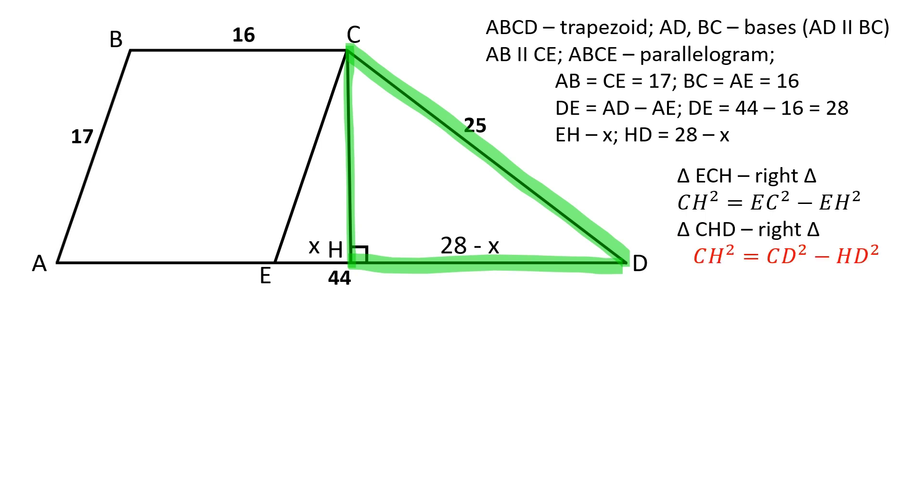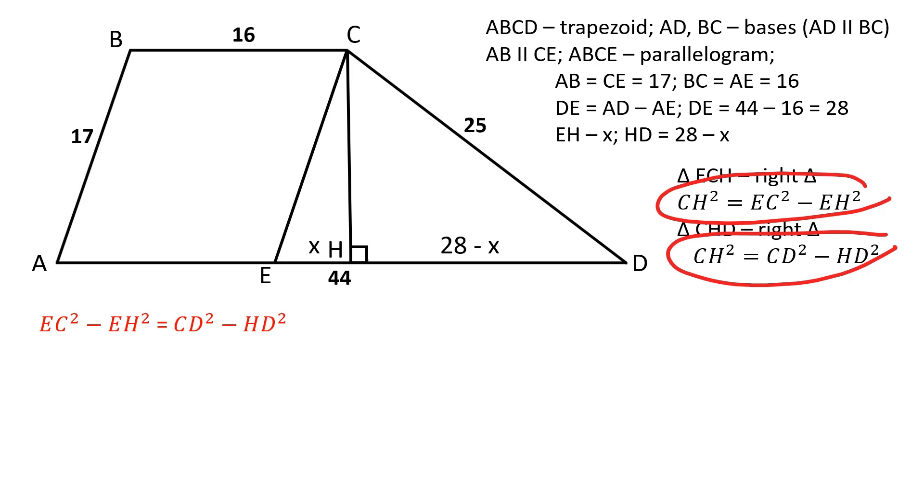Triangle CHD is also a right triangle. CH squared is equal to CD squared minus HD squared. Let's equate these two expressions.